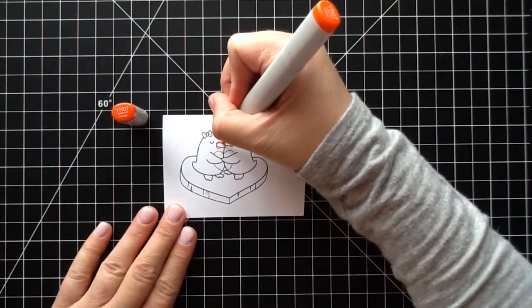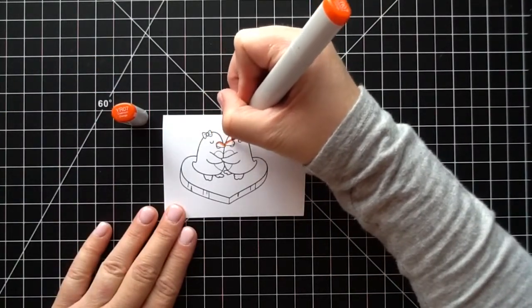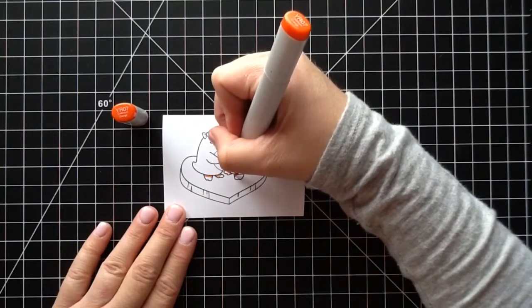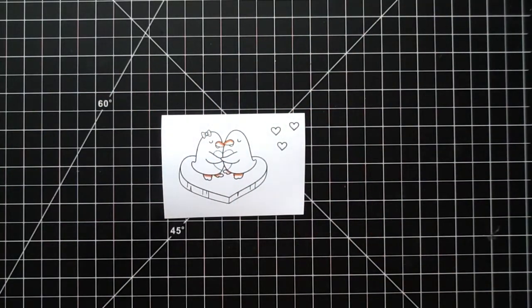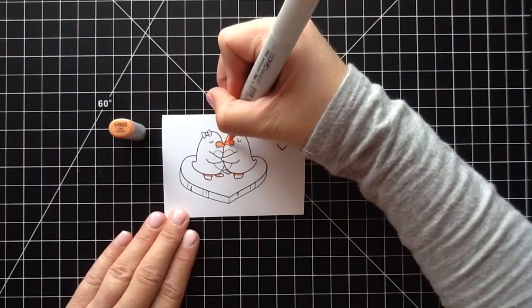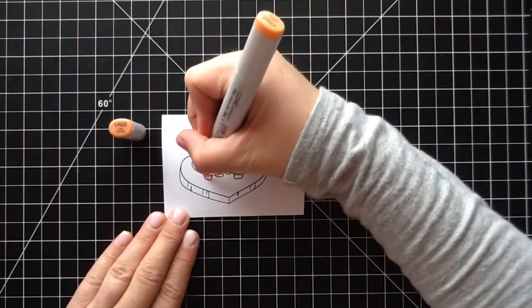For my coloring, I'll be using Copic Markers today. I'm starting with YR07 for the little beaks and their little feet there. Then I'm going to go in with YR02 and blend that out.